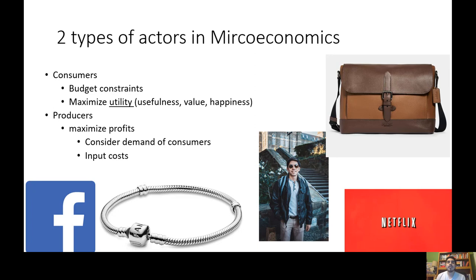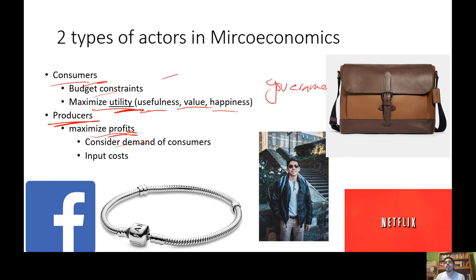The two actors in microeconomics — we usually deal with consumers and producers. We assume consumers have budget constraints and want to maximize utility, value, happiness, and benefit. Producers want to maximize profit, considering the demand of consumers and input costs. We're also going to use game theory to describe the behavior of states and governments as well.